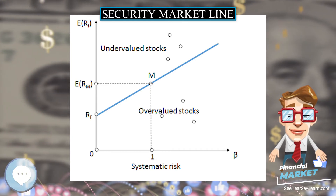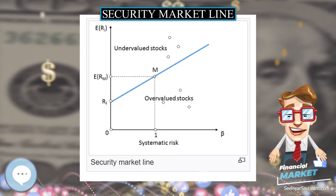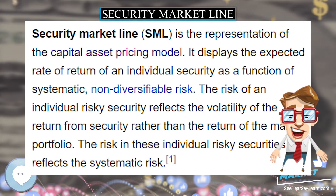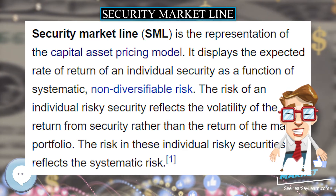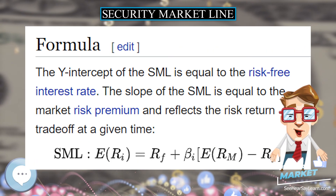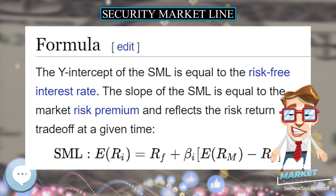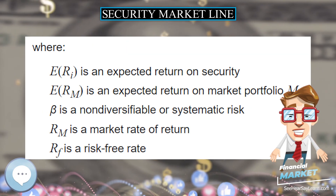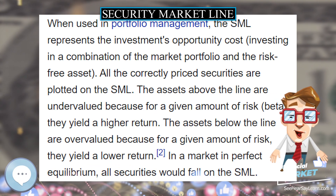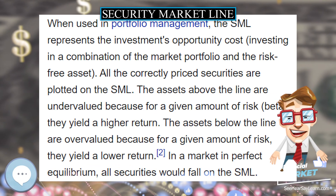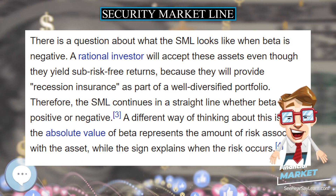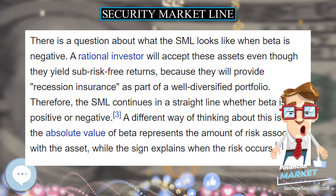From the efficient market hypothesis, it follows that we cannot beat the market. Therefore, all assets should have a Treynor ratio less than or equal to that of the market. If there is an asset whose Treynor ratio is bigger than the market's, then this asset gives more return per unit of systematic risk (beta), which contradicts the efficient market hypothesis. This abnormal extra return above the market's return at a given level of risk is what is called the alpha.